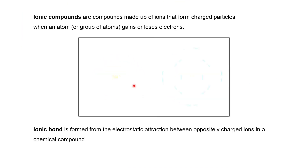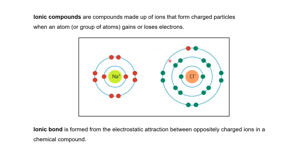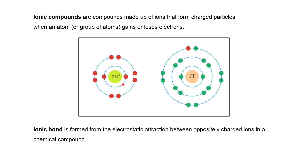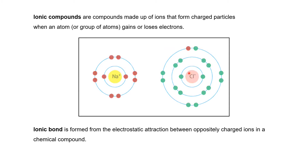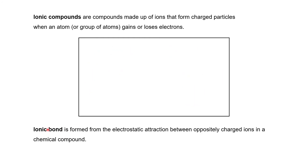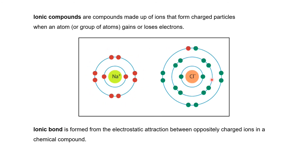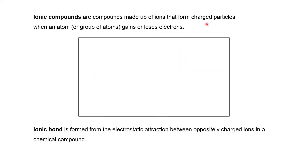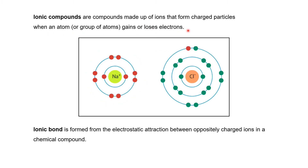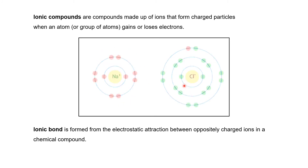Sodium has 1 valence electron and chlorine has 7 valence electrons. Sodium loses its 1 valence electron to attain noble gas configuration and it becomes Na⁺. Similarly, chlorine gains that 1 electron and attains a noble gas configuration, becoming the chloride ion Cl⁻. There is an attraction between the sodium ion and the chloride ion — this kind of interaction is called an ionic bond. So sodium chloride NaCl is formed, which is an ionic compound made up of ions, which are charged particles formed when an atom gains or loses electrons.